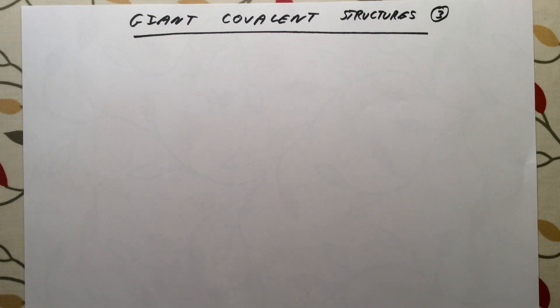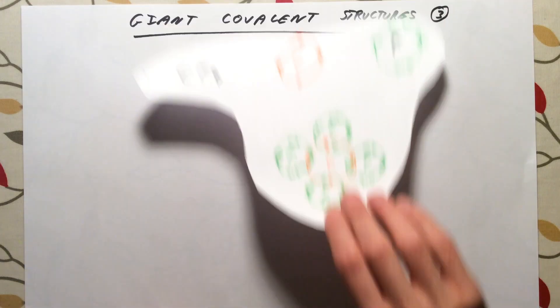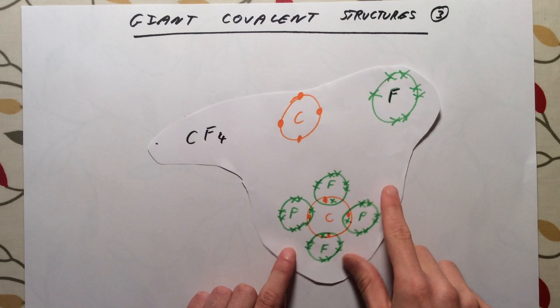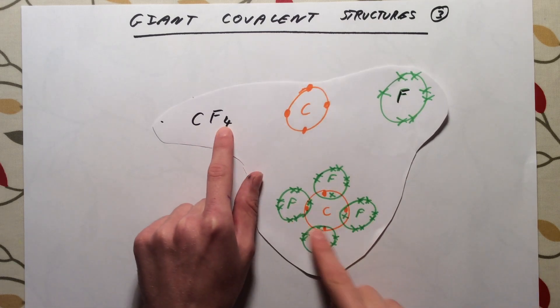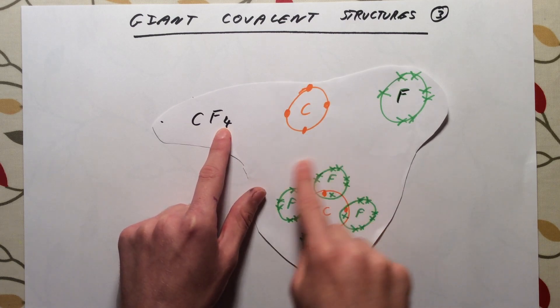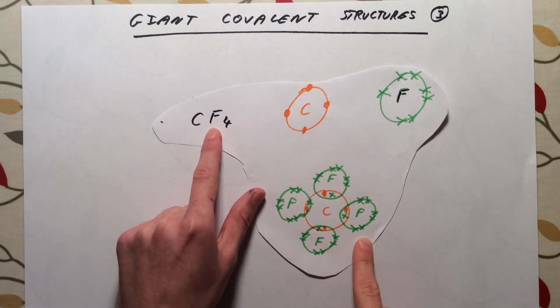In this video we're going to be looking at the structure and properties of giant covalent structures. The key difference between giant structures and simple covalent molecules is that for a simple covalent molecule such as CF4, we can definitively write that there is going to be one carbon atom bonded to four fluorine atoms. That is always going to be the case.